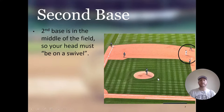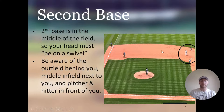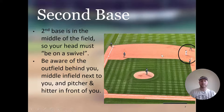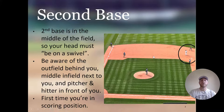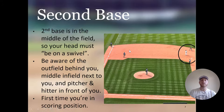Second base is in the middle of the field, so your head must be on a swivel. You have to be aware of all three outfielders behind you, the middle infield next to you — the shortstop could be right behind you — and the pitcher and hitter in front of you. You have to watch the pitcher to avoid getting picked off and watch the hitter to see where the ball is hit. Second base is also the first time you're in scoring position, meaning you're able to score on one hit into the outfield.